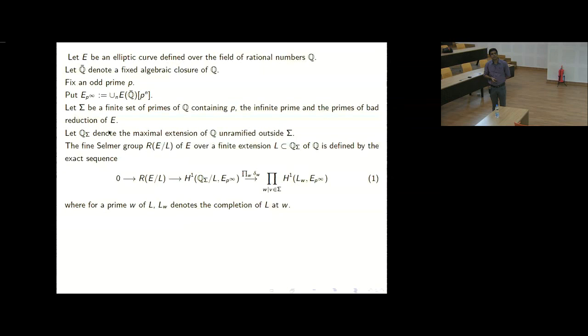The fine Selmer group consists of those first cohomology classes with coefficient in E[P^∞] which become trivial over those primes in sigma. Here, for a prime W, L_W denotes the completion of L at W. Sigma also has infinite primes, but since we are assuming P is odd, the P-primary part of H^1(L_W, E[P^∞]) will be mostly zero for infinite primes.